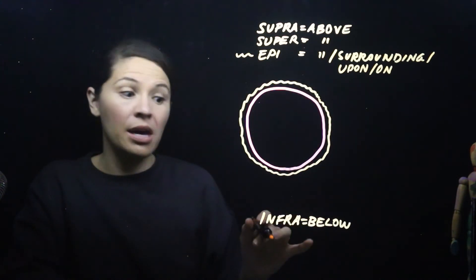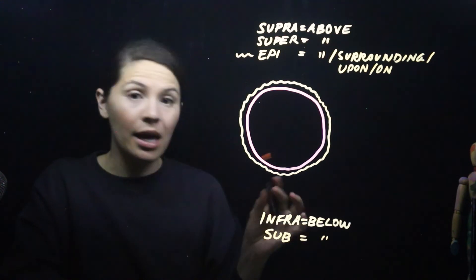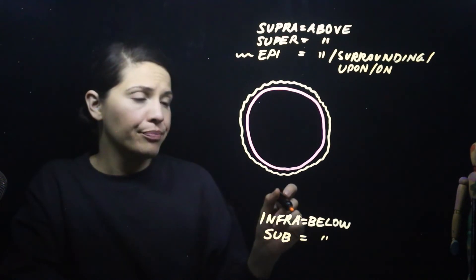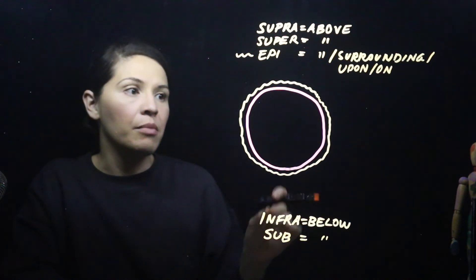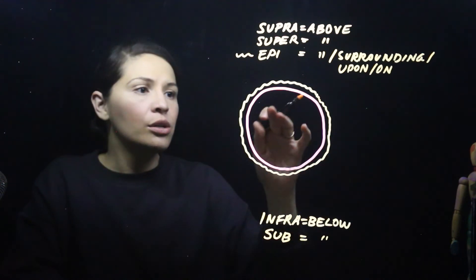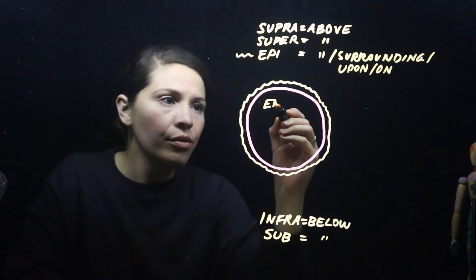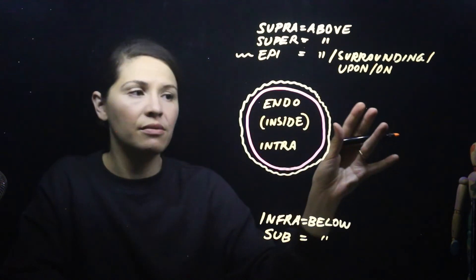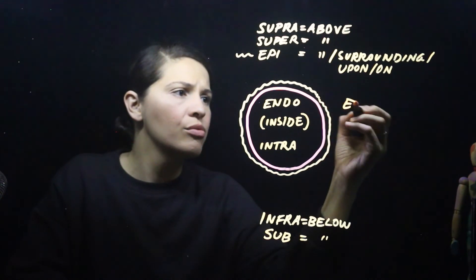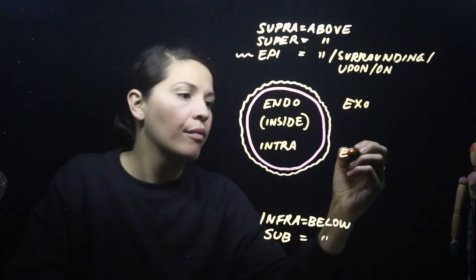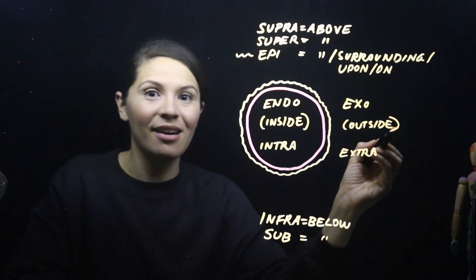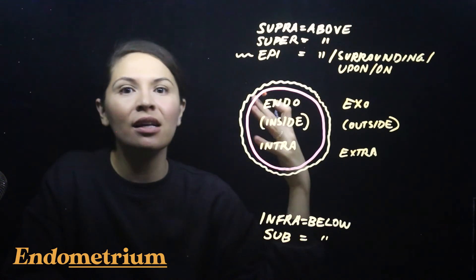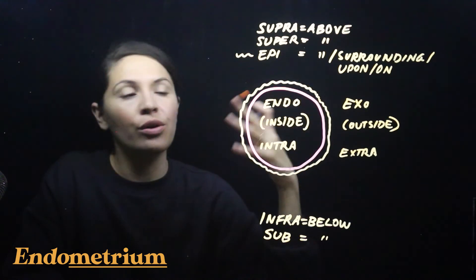Another prefix that means below is sub, which I used earlier in the subscapularis example. Now let's look at prefixes that mean inside and outside. Inside is represented by endo and also intra. An example of endo is endometrium — the inner lining of the uterus, where metrium is the root word associated with uterine structures. Also endocardium — the innermost layer of the heart wall.